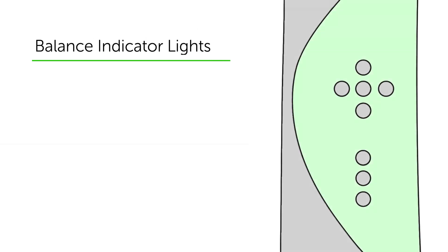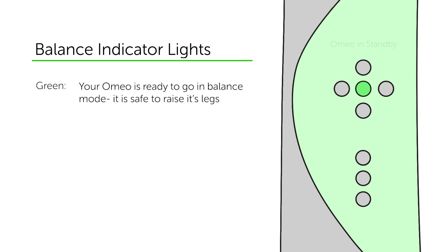The star pattern lights on your display panel are there to indicate your balance status. Green indicates that your Omeo is ready to go in balance mode and it is safe to raise its legs.